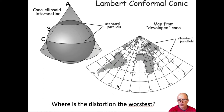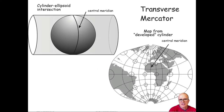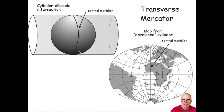Distortion is worse the further away you get from the lines of intersection — in this case, the standard parallels. There's another common kind of projection: the transverse cylindrical or cylindrical projection. Instead of a cone, we use a cylinder, which intersects along a single line or along two lines. In this case, it's a central meridian — just a single line.